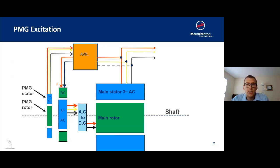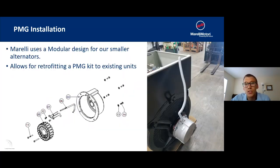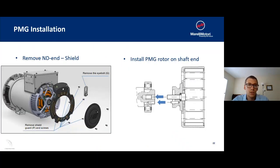For Morelli, our PMGs are a pretty easy install for our smaller units. We use a very modular design for our alternators, which allows you to retrofit a PMG kit to any of your existing units. If we look here at the breakdown of our PMG kit, it's just a few parts that we're going to bolt on to the end of the alternator. This picture on the right here is going to be what it looks like once it's installed. To install one of our PMG kits, all we're going to have to do is remove the non-drive-end shield of the generator, which is just held on with a few bolts, and install the PMG onto the rotor shaft ends where there's slots already installed on the shaft for the PMG.